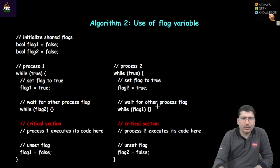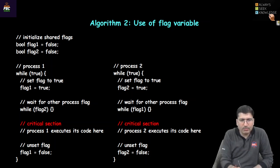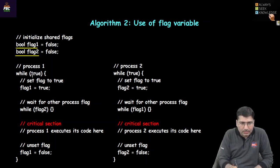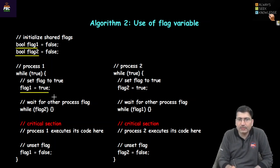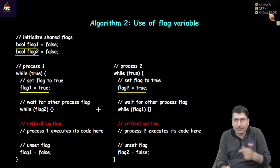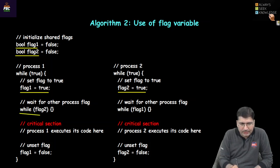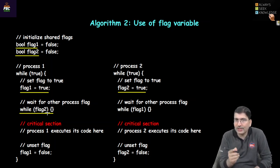Let us discuss another algorithm based on flag variables. We take two boolean flag variables, flag 1 and flag 2, both initially false. When process 1 executes, it first sets its own flag as true. When process 2 executes, it sets flag 2 as true. Every process sets its own flag, and then checks the other process's flag. Process 1 checks flag 2 and process 2 checks flag 1.